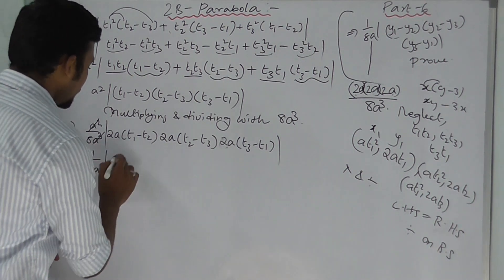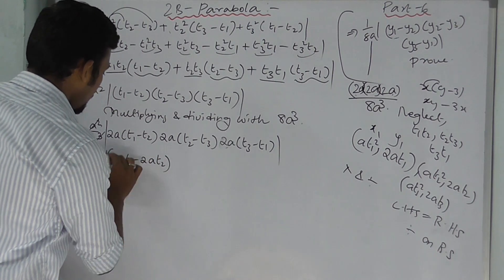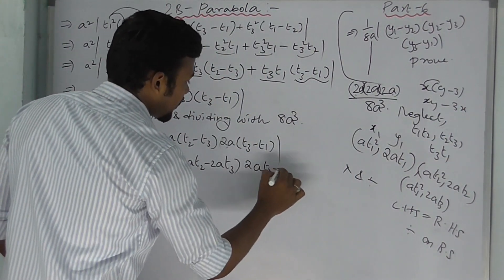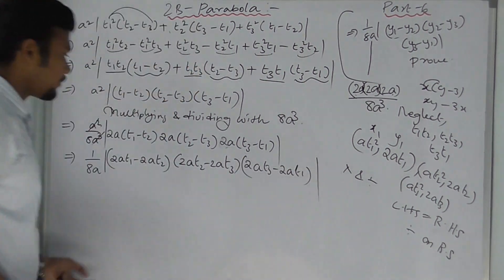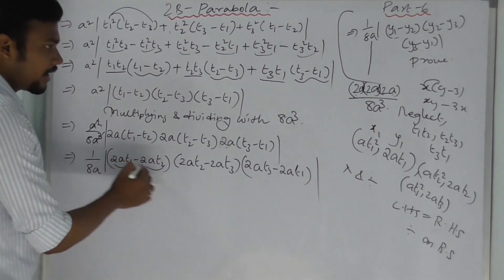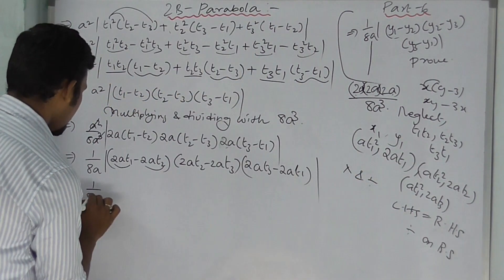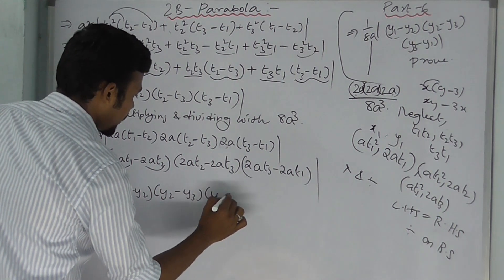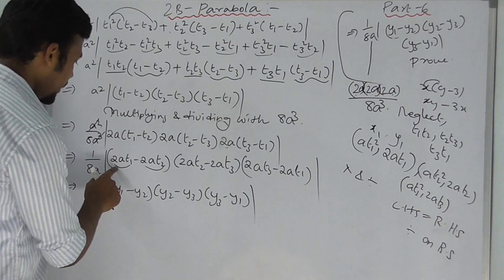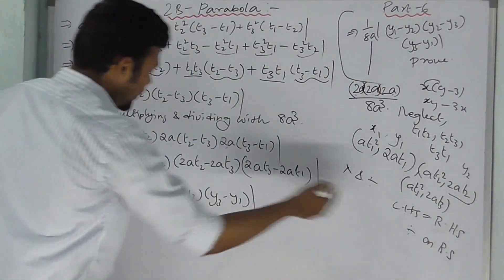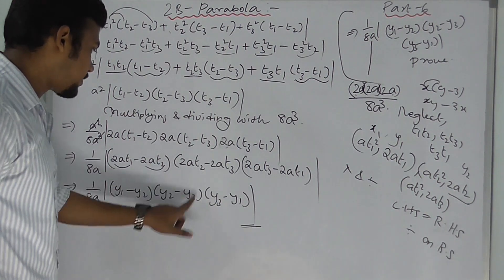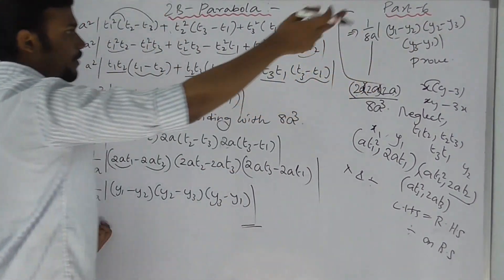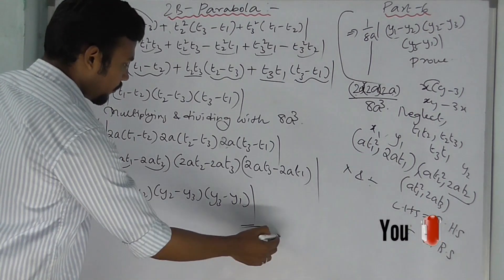Therefore, the area of the triangle inscribed in the parabola y² = 4ax equals (1/8a)|y1−y2||y2−y3||y3−y1|. This is what we had to prove, and we have proved it. Hence proved. The answer must be written with square units.